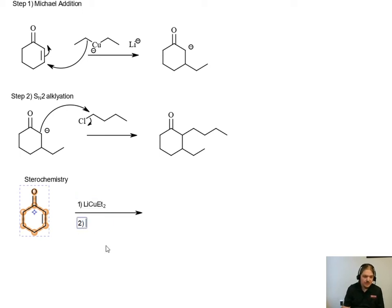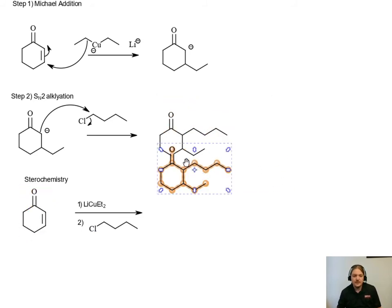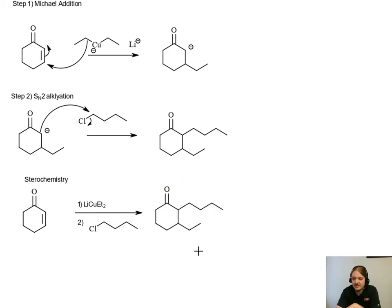So we have one condensed lithium diethyl cuprate. And then two, well here I'll put in the two, I can at least draw chlorobutane, one chlorobutane. So yeah, the reaction produces two new chirality centers, which means there are actually four possible stereoisomers, but only two of them actually happen.